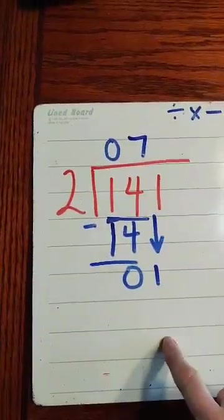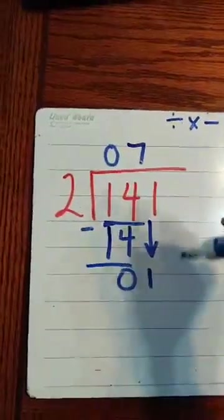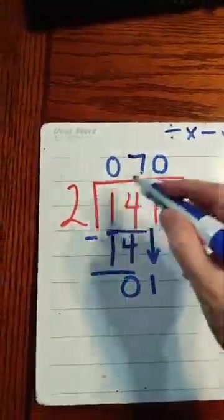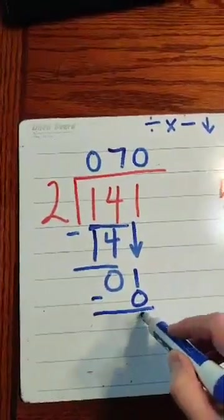So now I'm back to divide. Does 2 go into 1? No, it doesn't, so I put a 0 above that 1 because that's what we're talking about. 0 times 2, 0. I do my subtracting, I get 1.